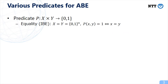I will give some examples for predicates. Identity-based encryption is the simplest example for a class of ABE, in which attributes x and y satisfy a predicate P if x equals y.